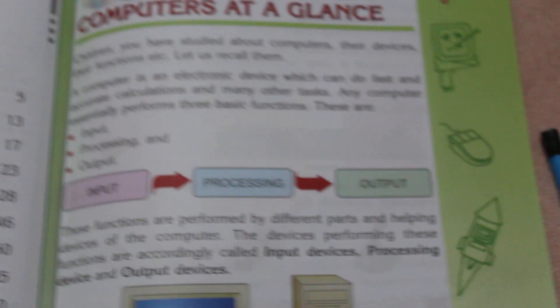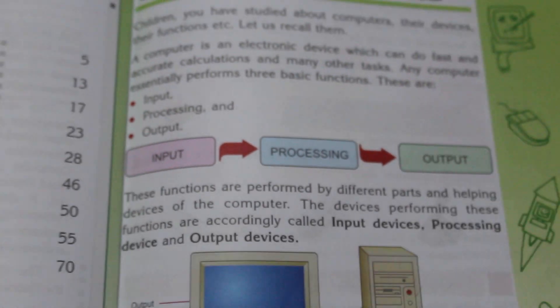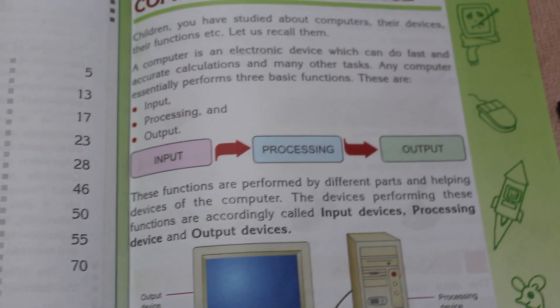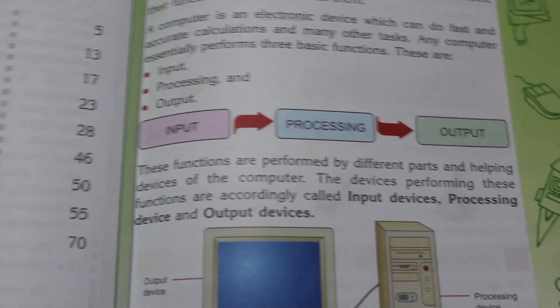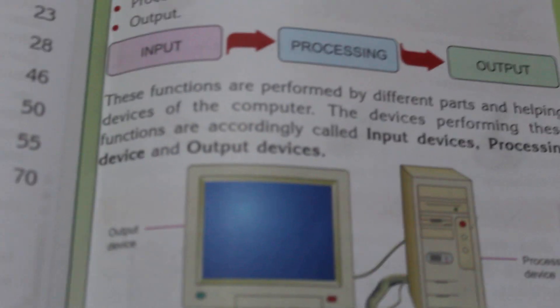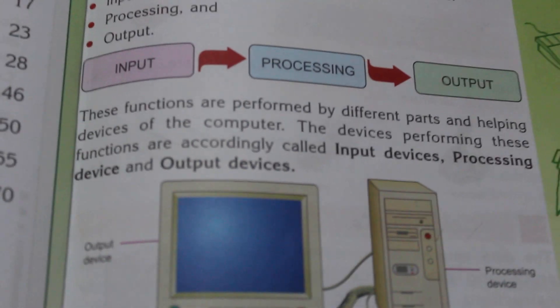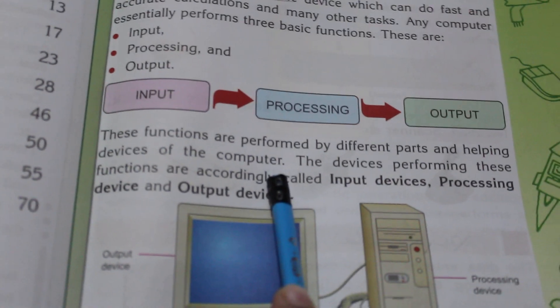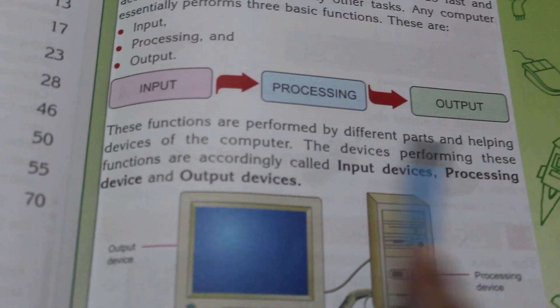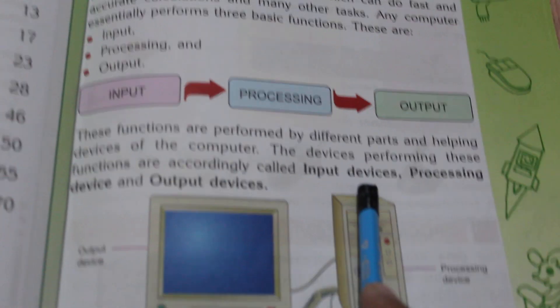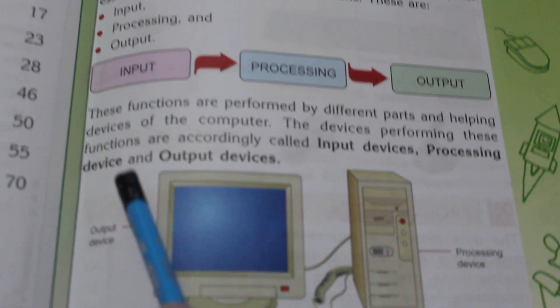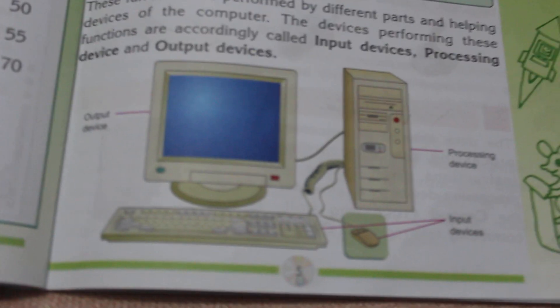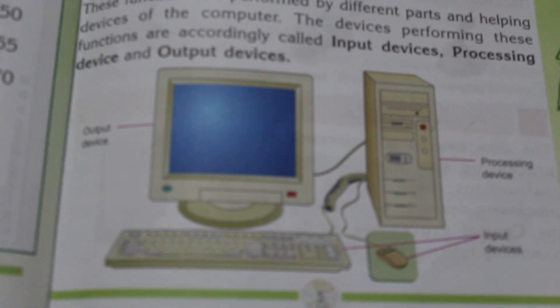Your brain is the processing device. Similarly, the CPU is the processing device of the computer. These functions are performed by different parts and helping devices of the computer. The devices performing these functions are accordingly called input devices, processing device, and output devices.